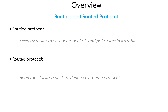We have OSPF, EIGRP, or BGP as routing protocols. The router uses the routing protocol to forward routing protocol packets to the destination.